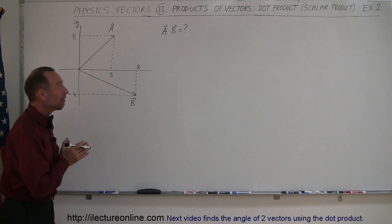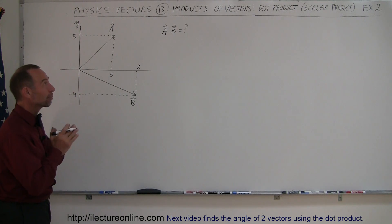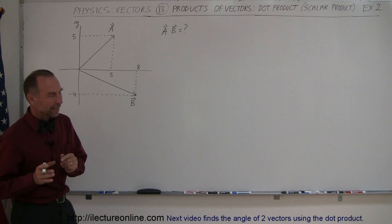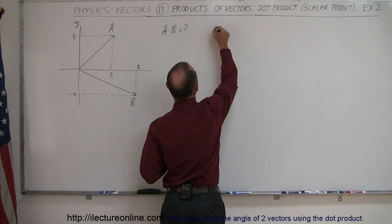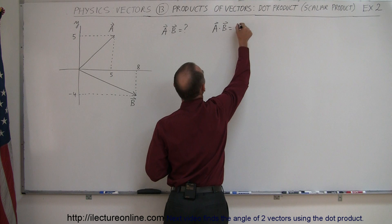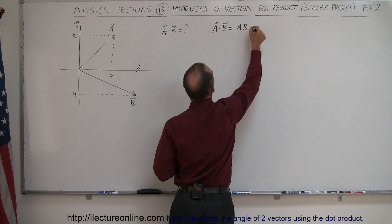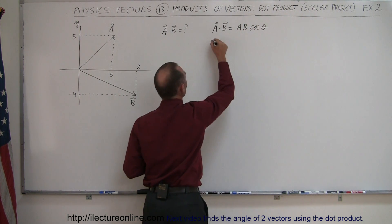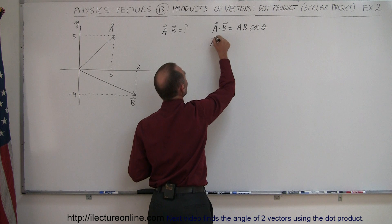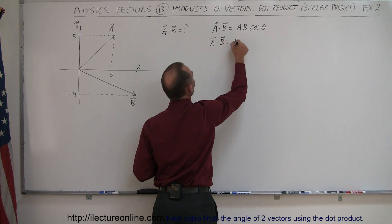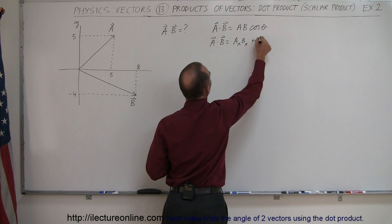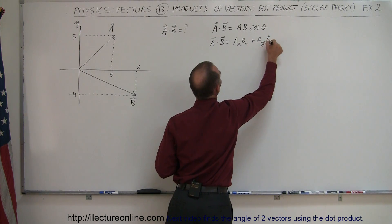Here's our second example of how to take a dot product. There are two methods in which we can take the dot product. The first method is that A dot B is equal to the magnitude of A times the magnitude of B times the cosine of the angle between them. The second method is A dot B is equal to A sub X times B sub X plus A sub Y times B sub Y.